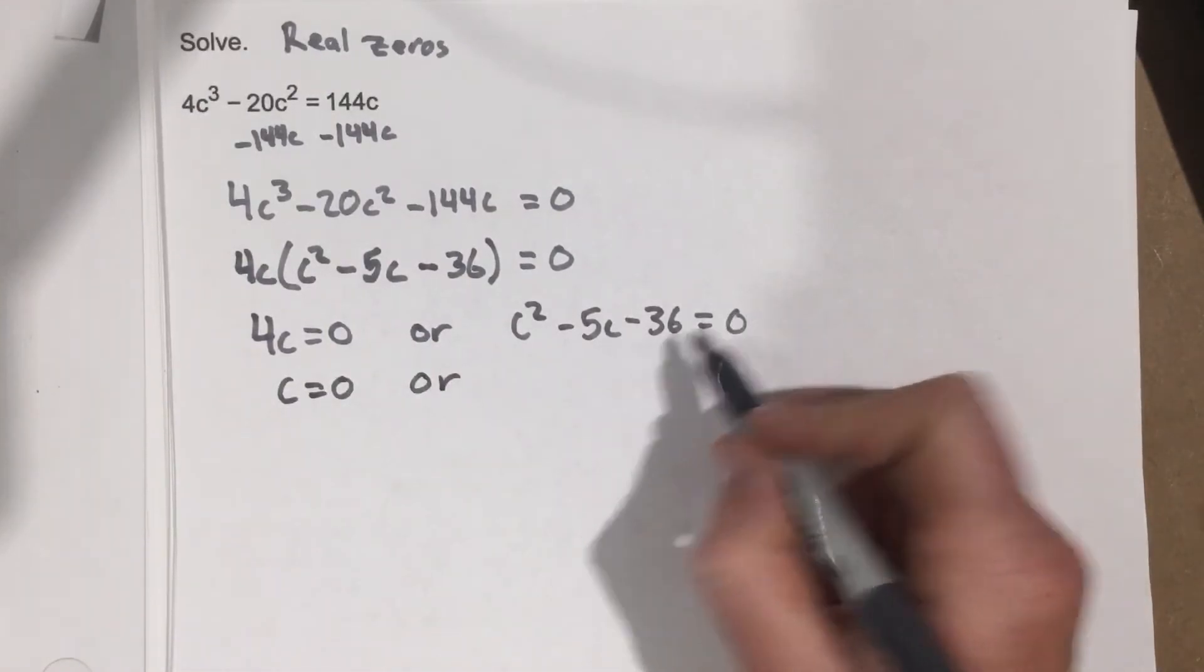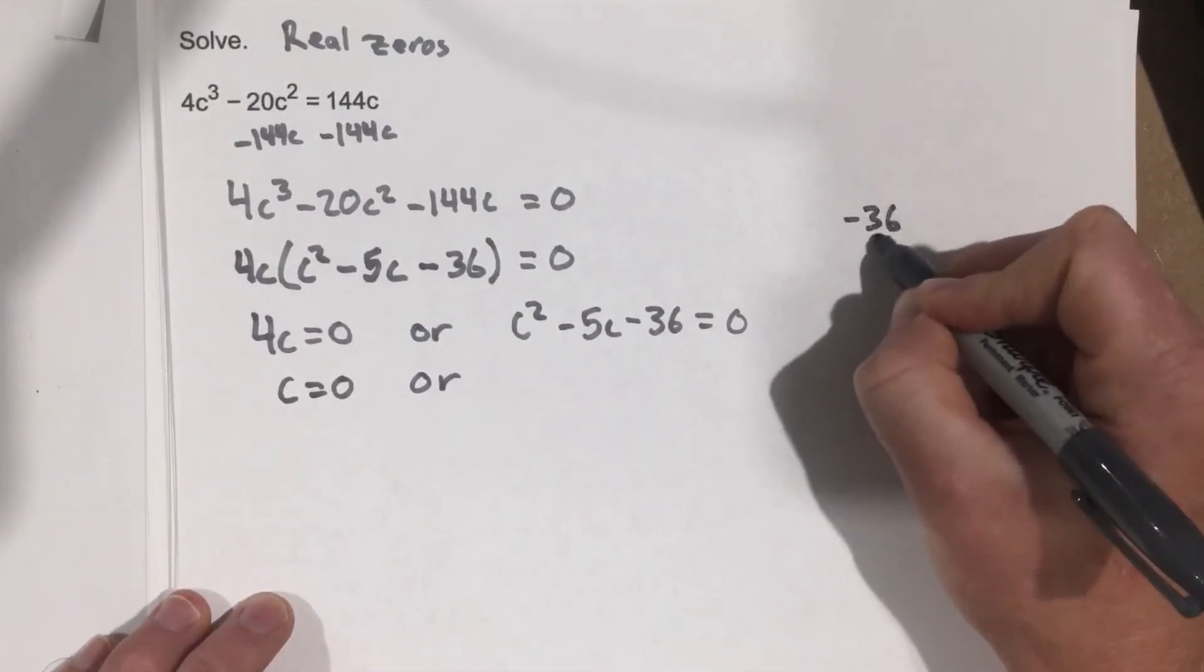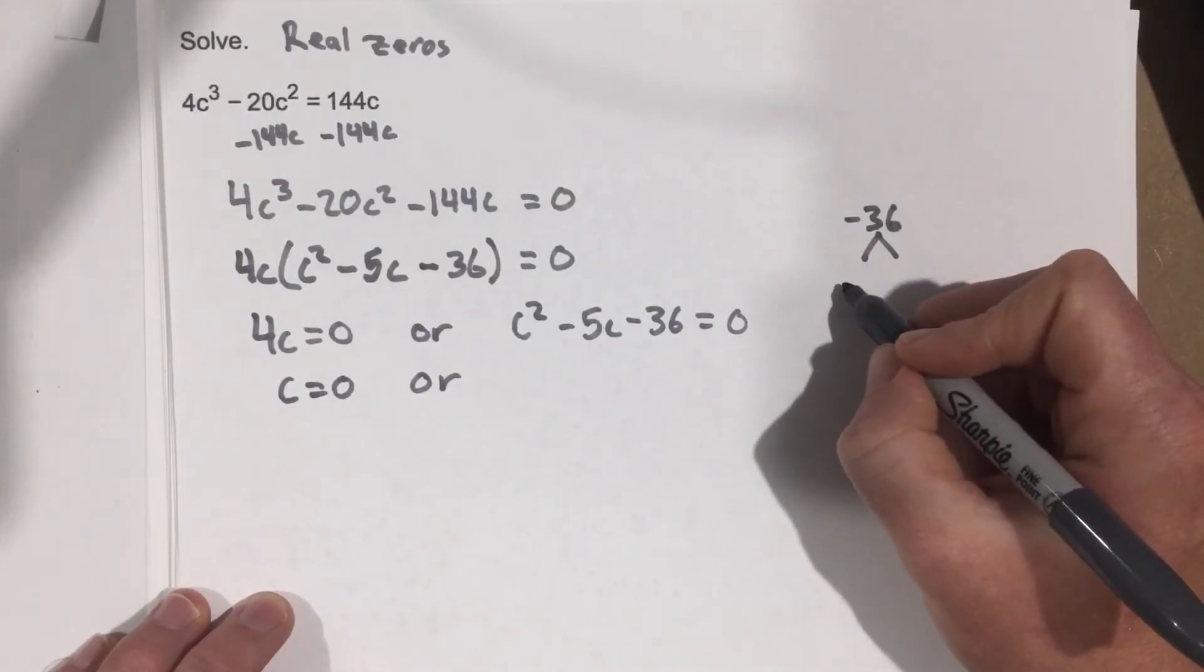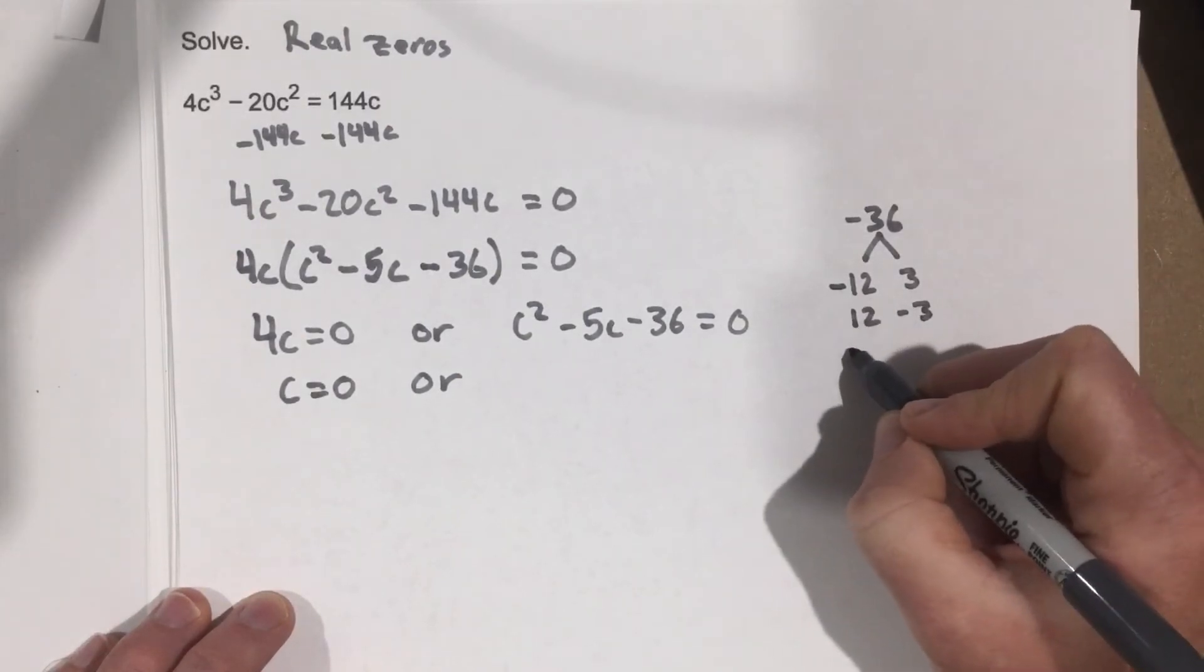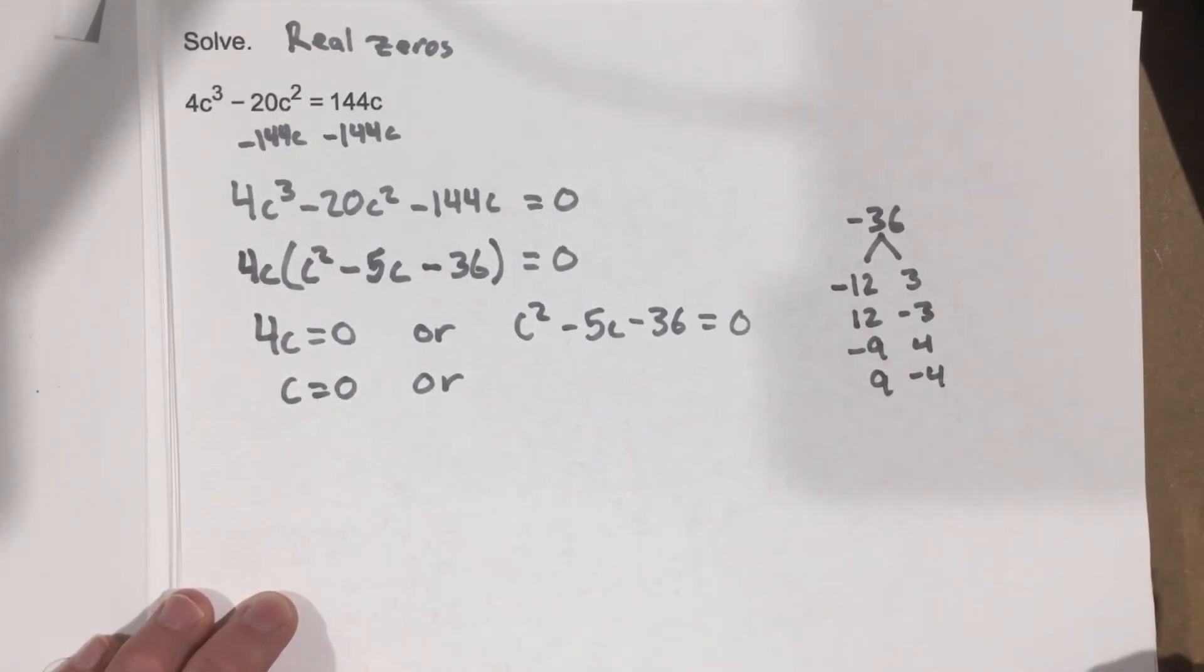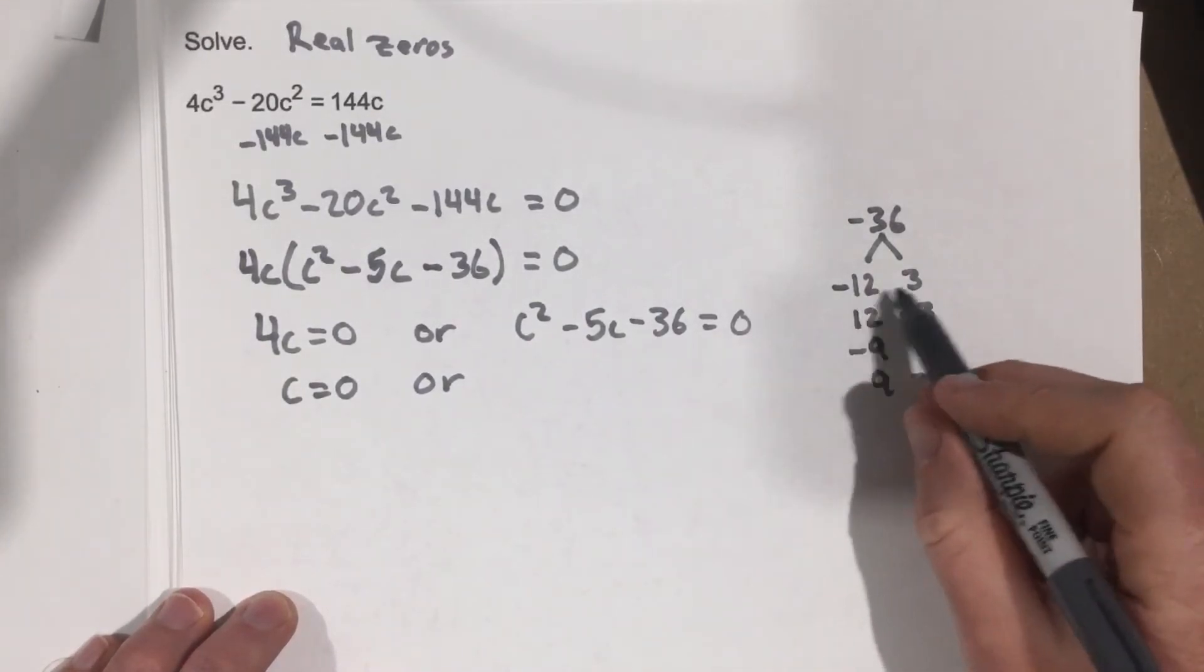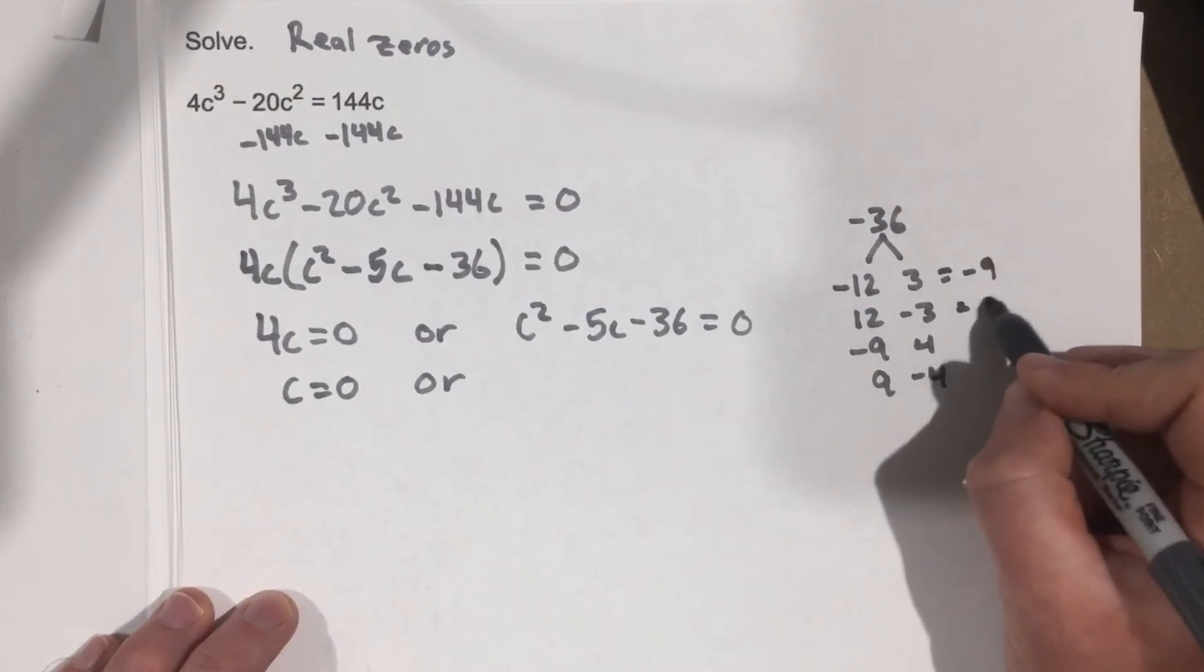Or, on this part, I'm going to try and do some factors. So let's look at the factors of negative 36. Factors of negative 36: negative 12 and 3, 12 and negative 3, negative 9 and 4, 9 and negative 4. Those are pretty common ones. Let's see, negative 9 and 4. Let's add these together. That's going to be negative 9. That'll be 9. This gives you negative 5.